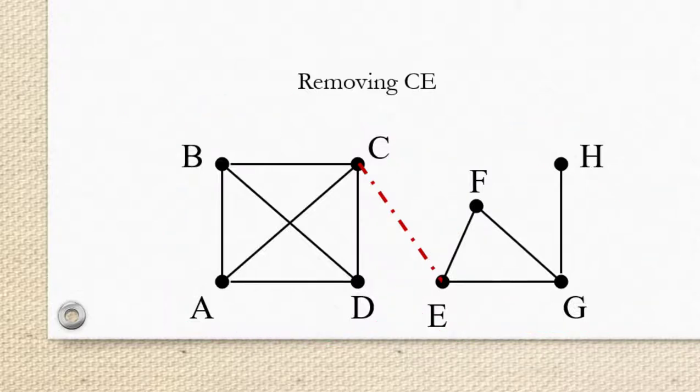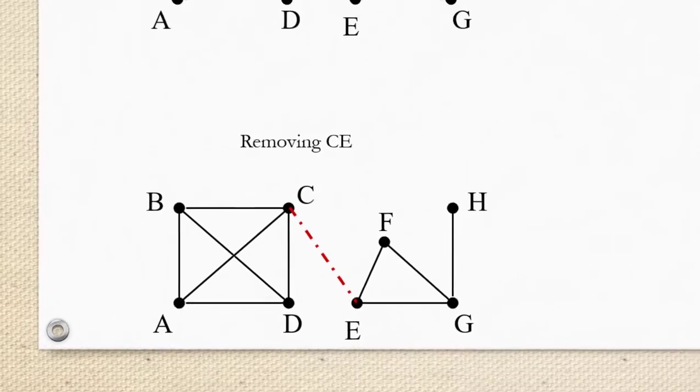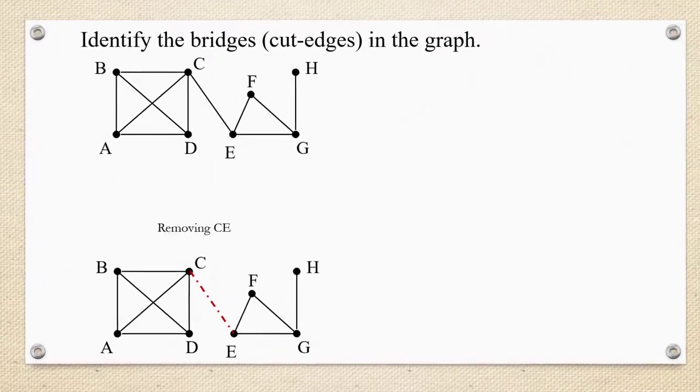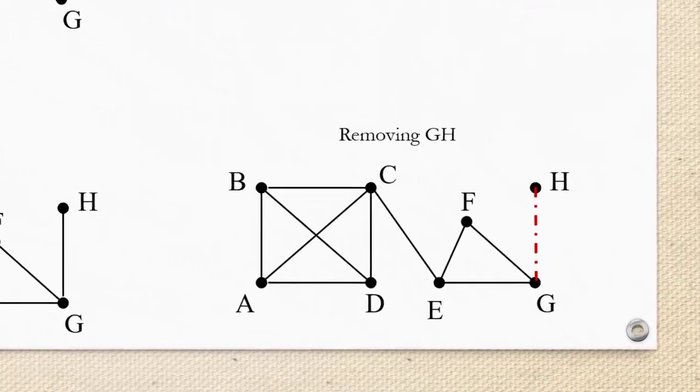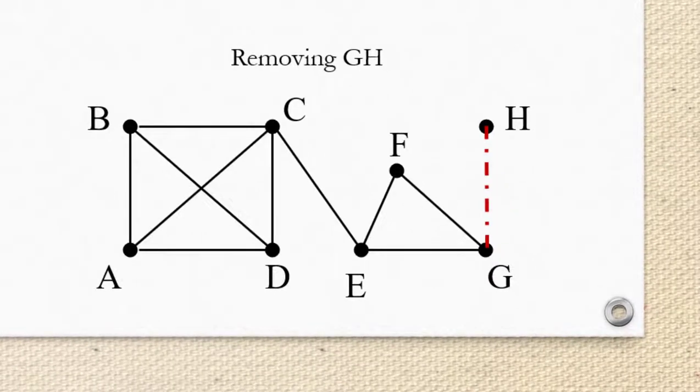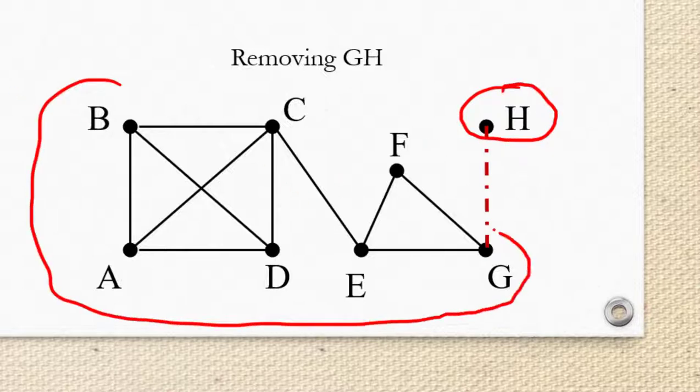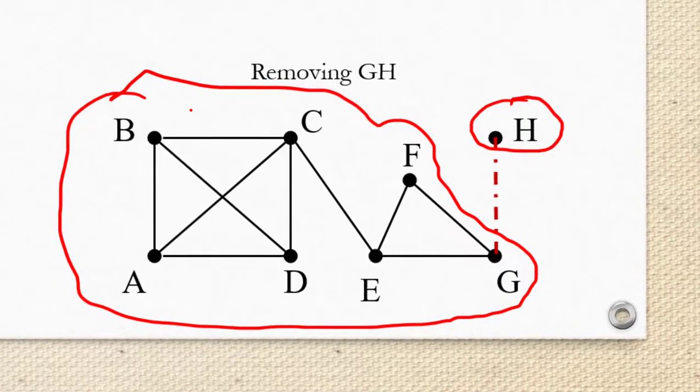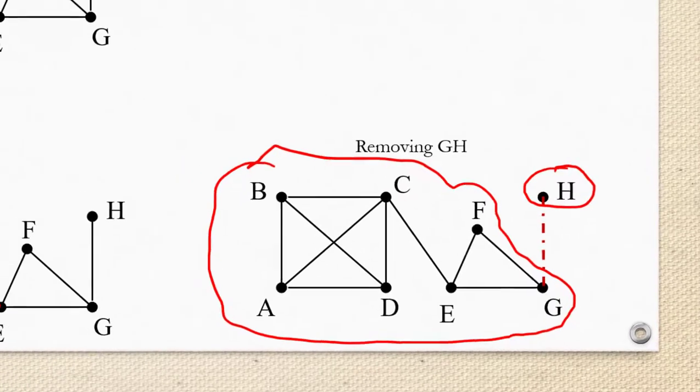Now let's check H, G, the other edge that was not part of a circuit. So if we remove G, H, you might think that it doesn't disconnect the graph, but this is a little bit of a tricky one. We actually do still have two components. We have a component that is comprised of just the vertex H all by itself, and then we have a second component that is all the rest of the graph.